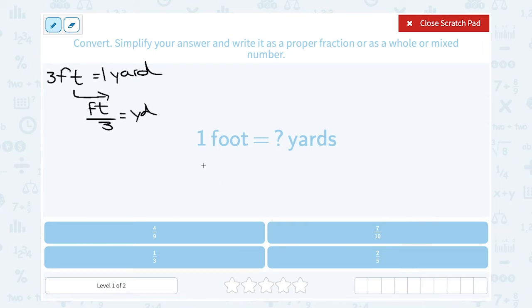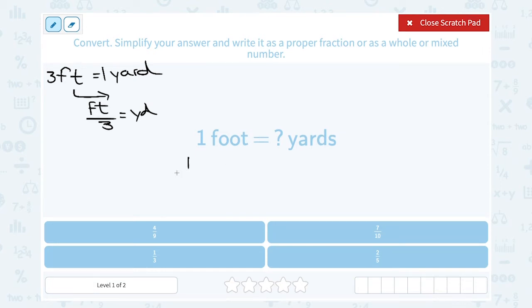So in this case, if I have one foot, my one foot divided, or over three, would give me the number of yards. So it's one-third of a yard.